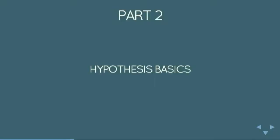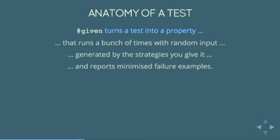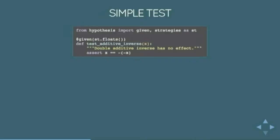So we've seen an example but how does Hypothesis actually work and how do you use it? So @given is the decorator that turns a function into a property that is run as a test. So it turns a test into a property that runs a whole bunch of times with randomly generated input that's generated by the strategies you give it. And it'll report minimized failure examples at the end of the test run.